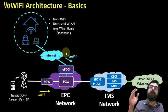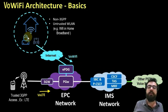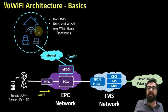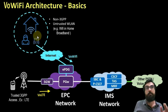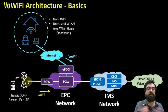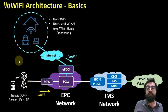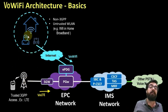Once the IMS bearer is established, the UE sends an RRC bearer deactivation request towards the eNB, saying: I do not need my previous bearer anymore. So that bearer will be deactivated, and we keep the new IMS bearer.